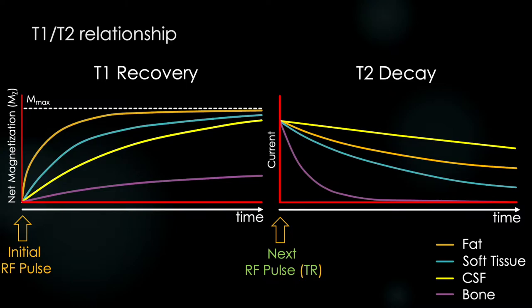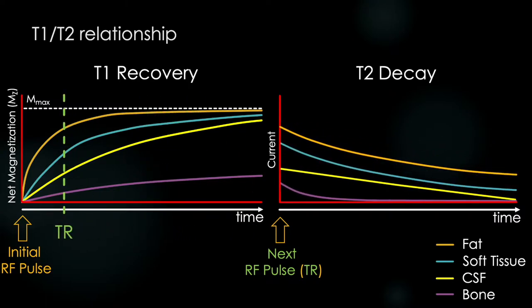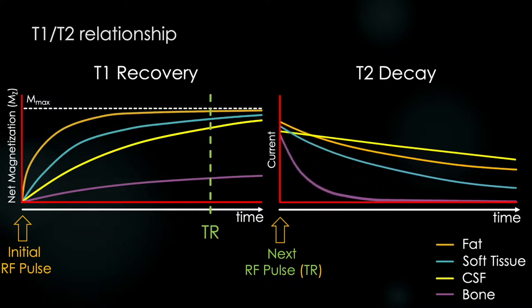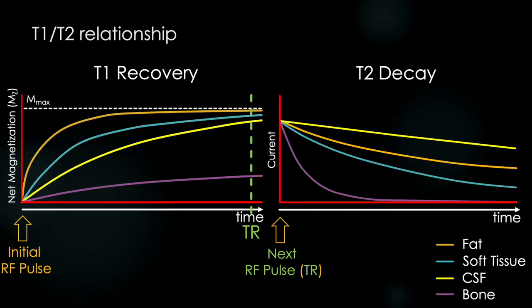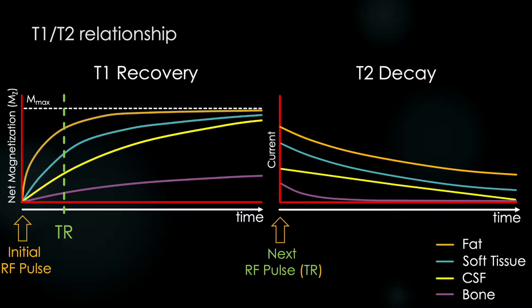If we were to apply our next RF pulse here, it would generate the T2 decay curves we see on the right. In the previous lecture we showed that this time until our next RF pulse — the time of repetition TR — will in fact affect the amplitudes of our T2 decay curves. Now watch what happens to our T2 decay curves when we shorten TR. And when we lengthen TR? As we shorten TR, we affect the overall amplitude of our T2 decay curves, particularly the starting points.